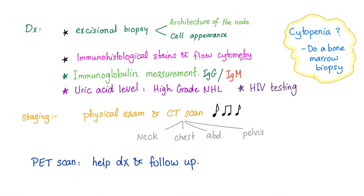Staging: we need a physical exam and a CT scan of the neck, chest, abdomen, or pelvis. PET scan helps diagnose and follow up. If you have cytopenia, such as pancytopenia, we need a bone marrow biopsy to determine the cause.